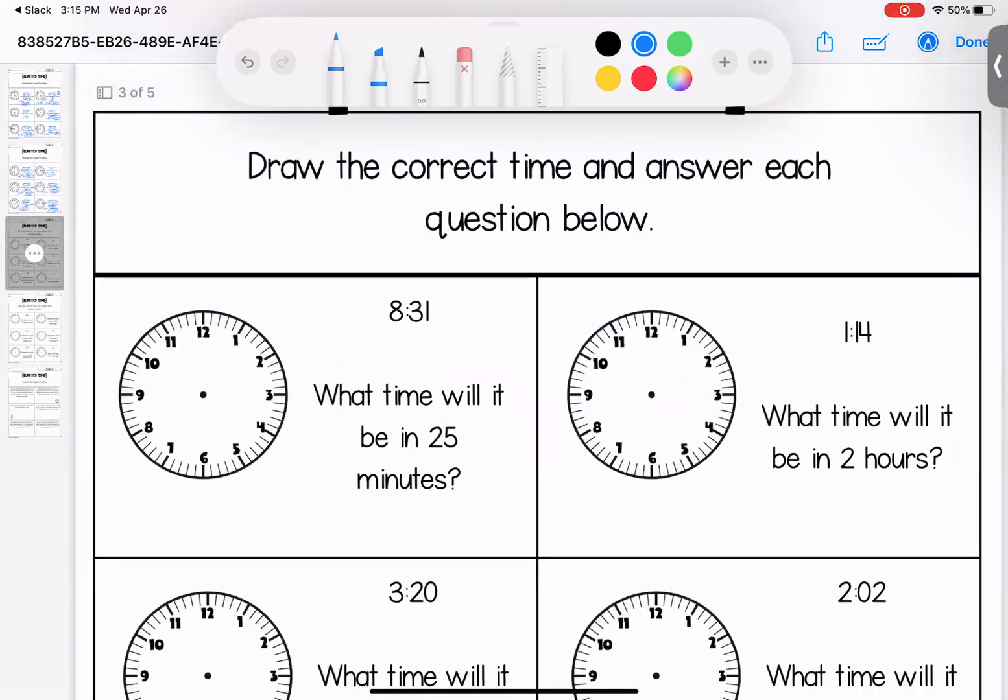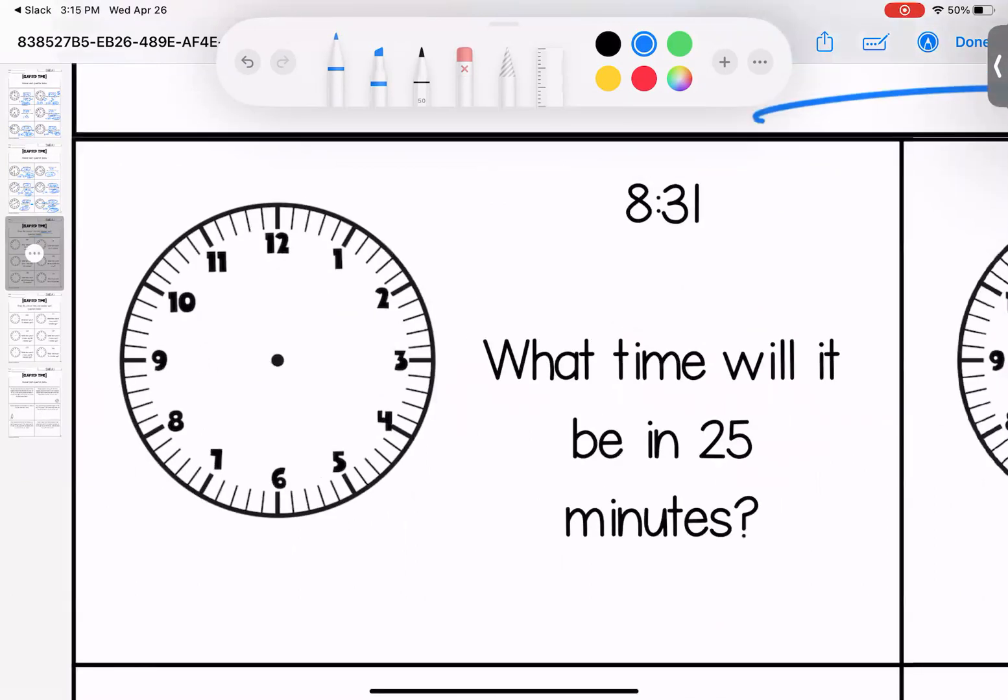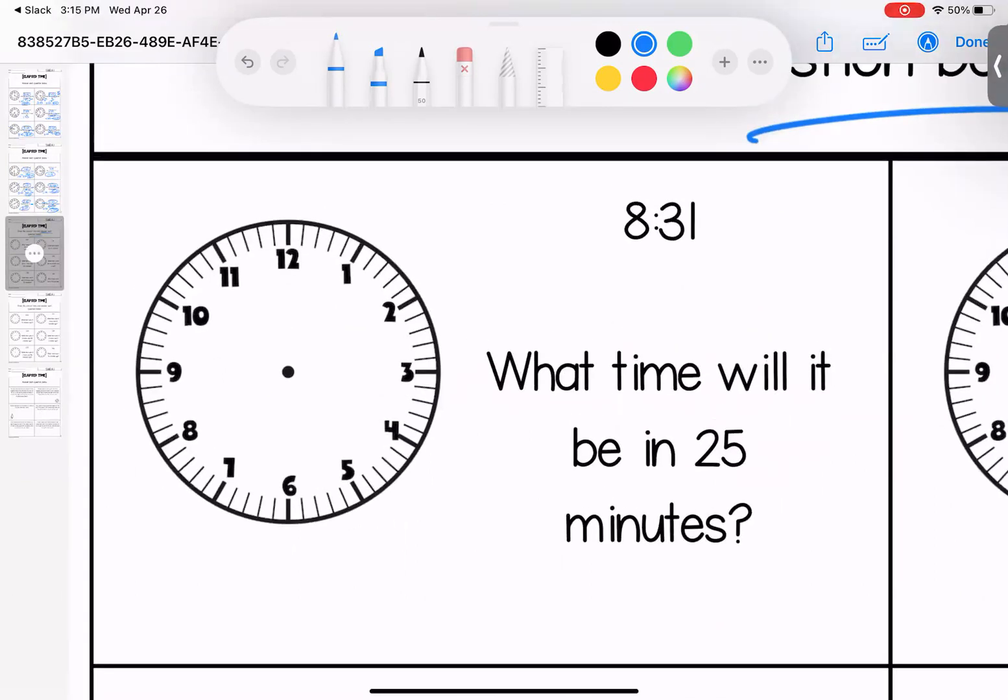All right, draw the correct time and answer each question below. So draw 8:31. What time will it be in 25 minutes? 8:31 plus 25 minutes is going to be 8:56.